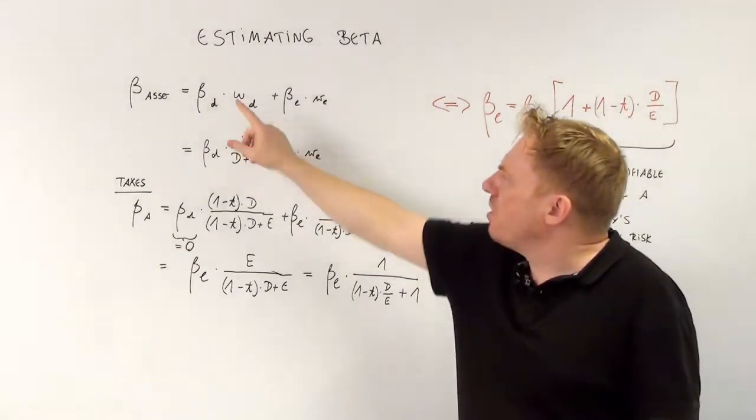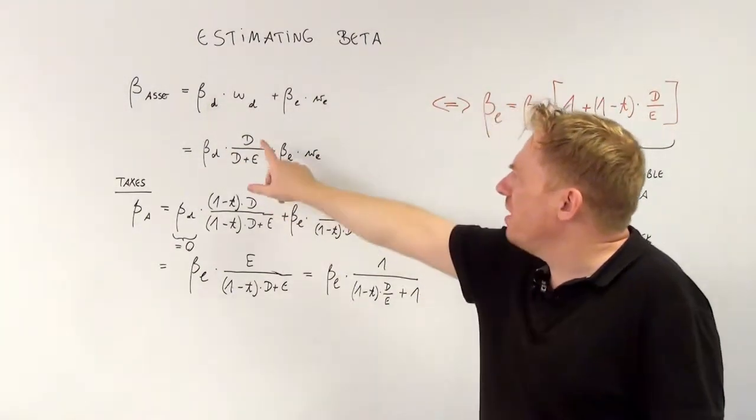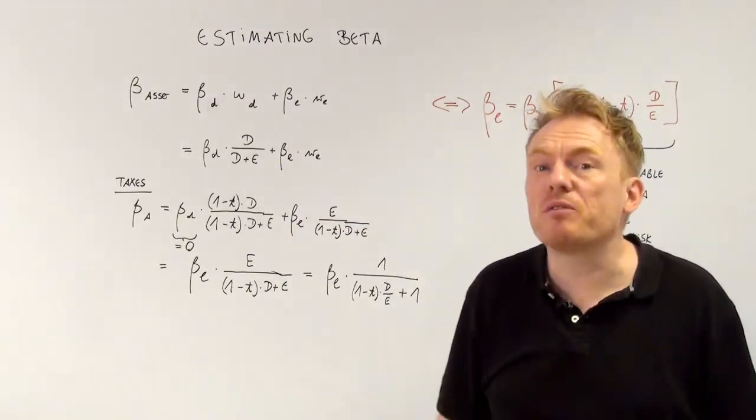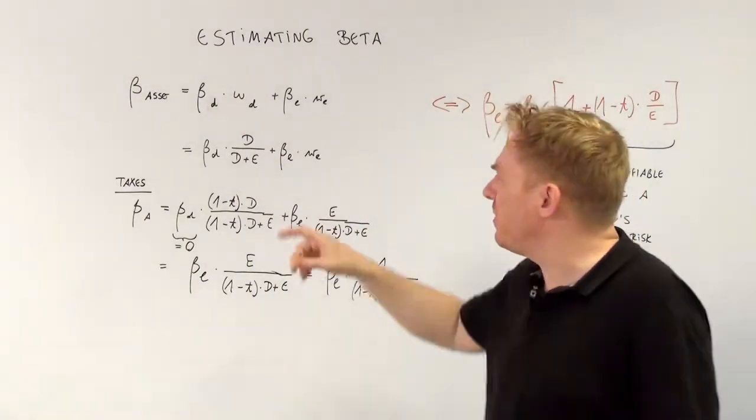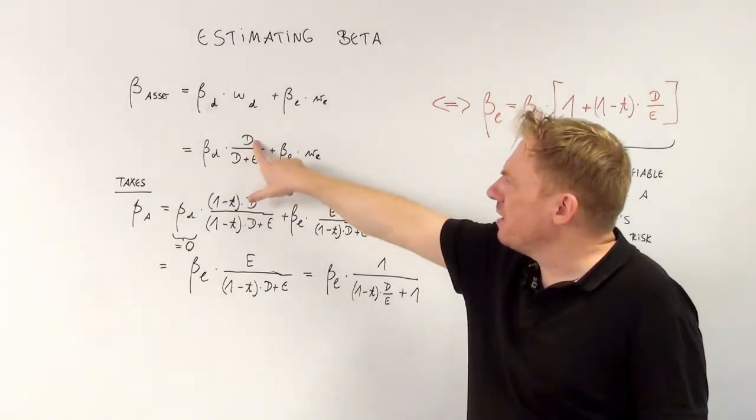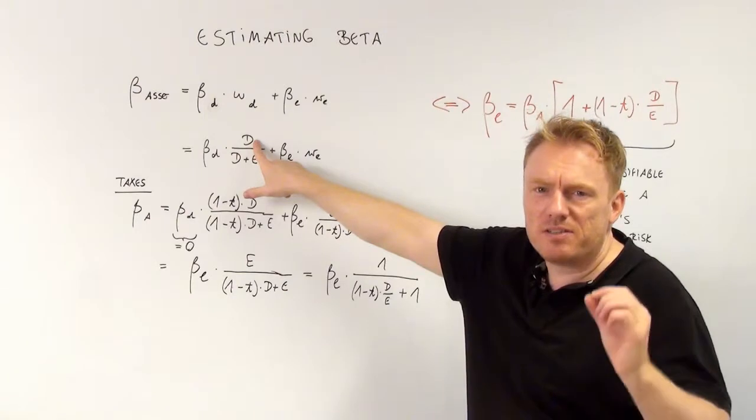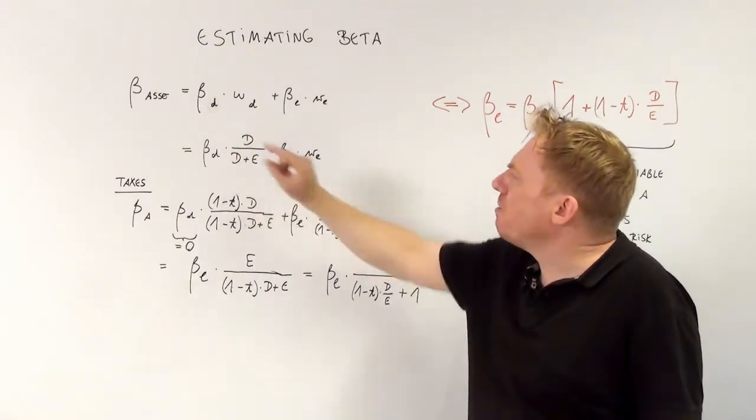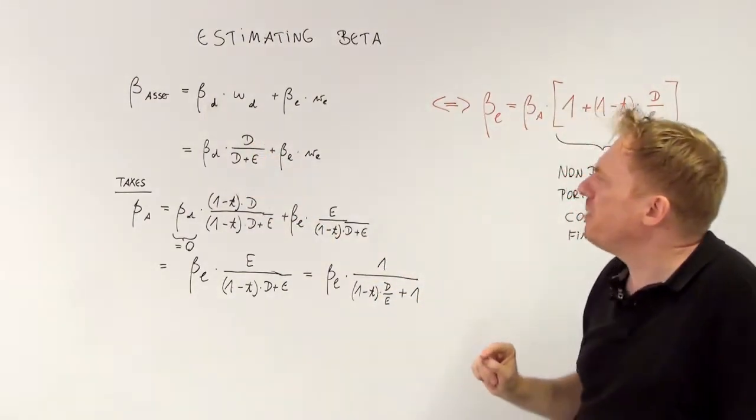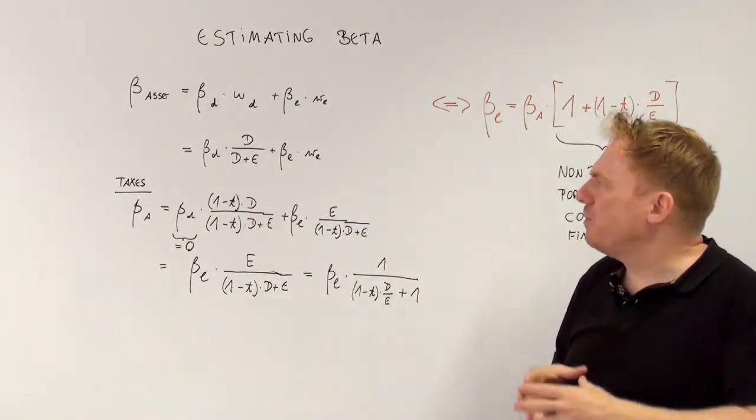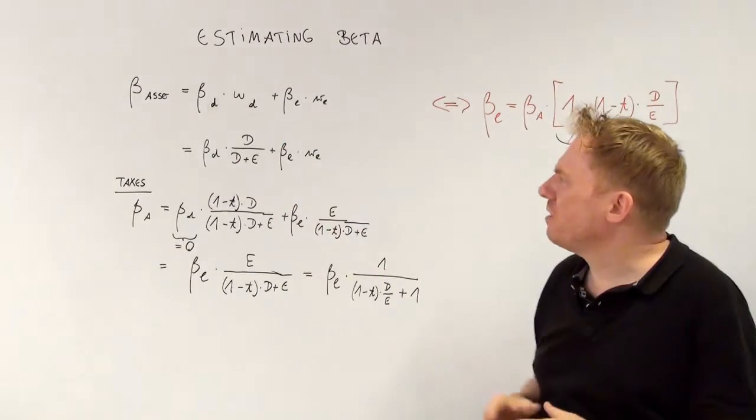The proportion of debt is the market value of debt, not the book value, so you need to be careful. Here D is not equal to book value, it equals market value. The market value of debt divided by the market value of debt plus equity is this portion.